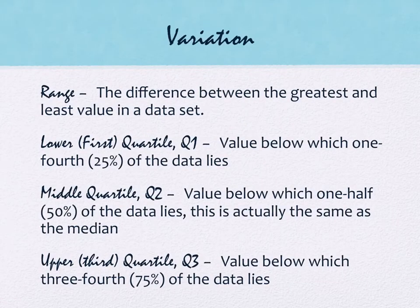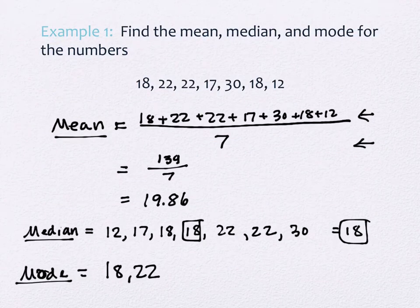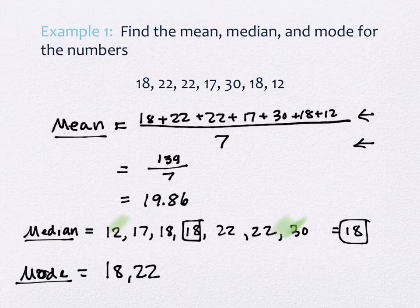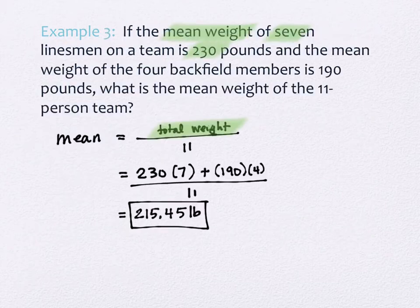The first type of variation we're talking about is called the range. The range is just the difference between the greatest and the least value in a data set. If I were looking at this previous problem over here, my greatest value was a 30 and my least value is a 12. So range would just be to subtract the 30 minus the 12. Okay. So that's range.